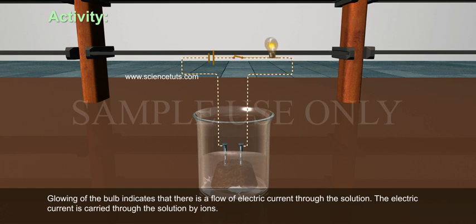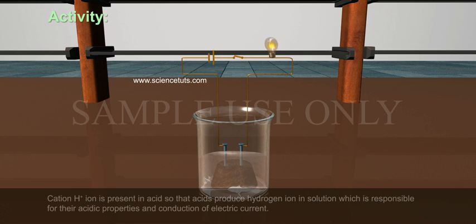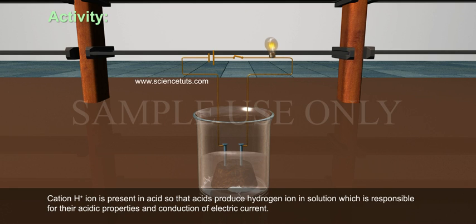Glowing of the bulb indicates that there is a flow of electric current through the solution. The electric current is carried through the solution by ions. Cation H+ ion is present in acid, so acids produce hydrogen ion in solution, which is responsible for their acidic properties and conduction of electric current.